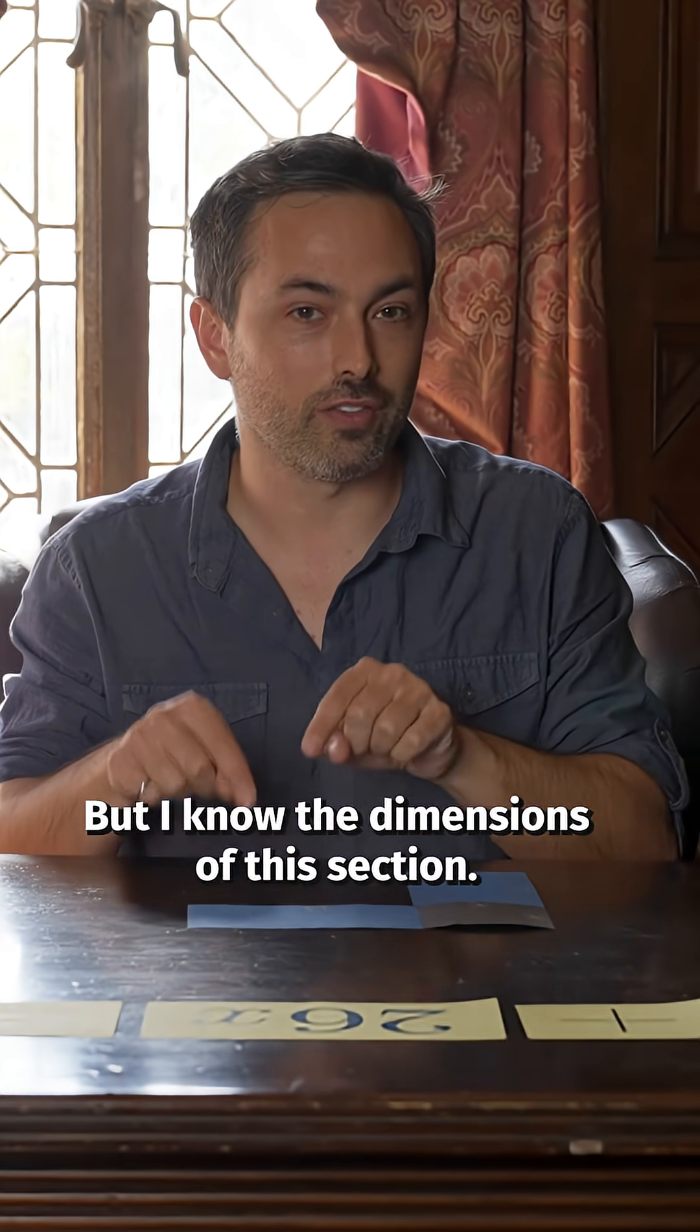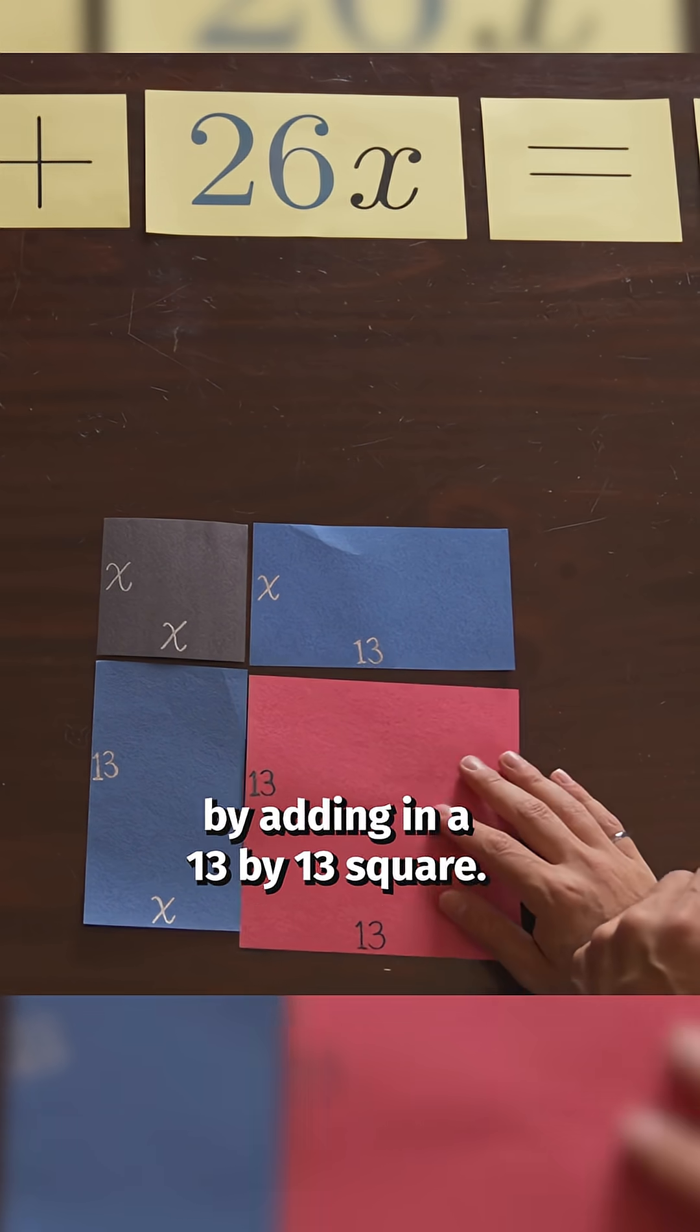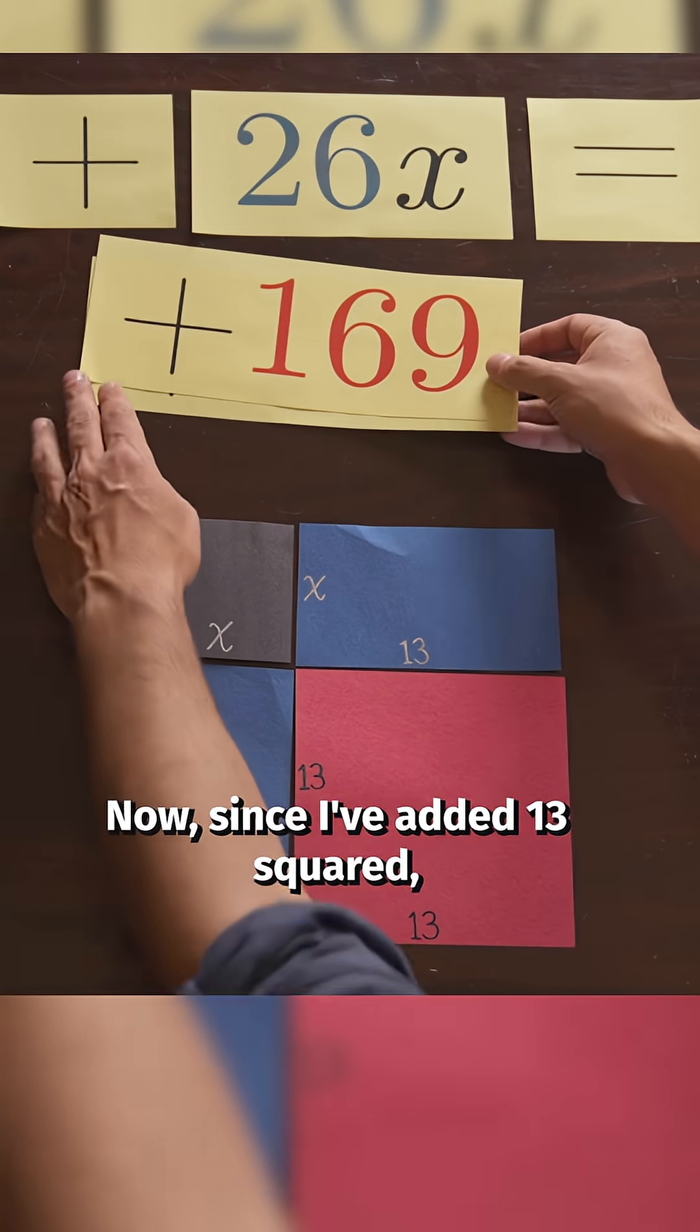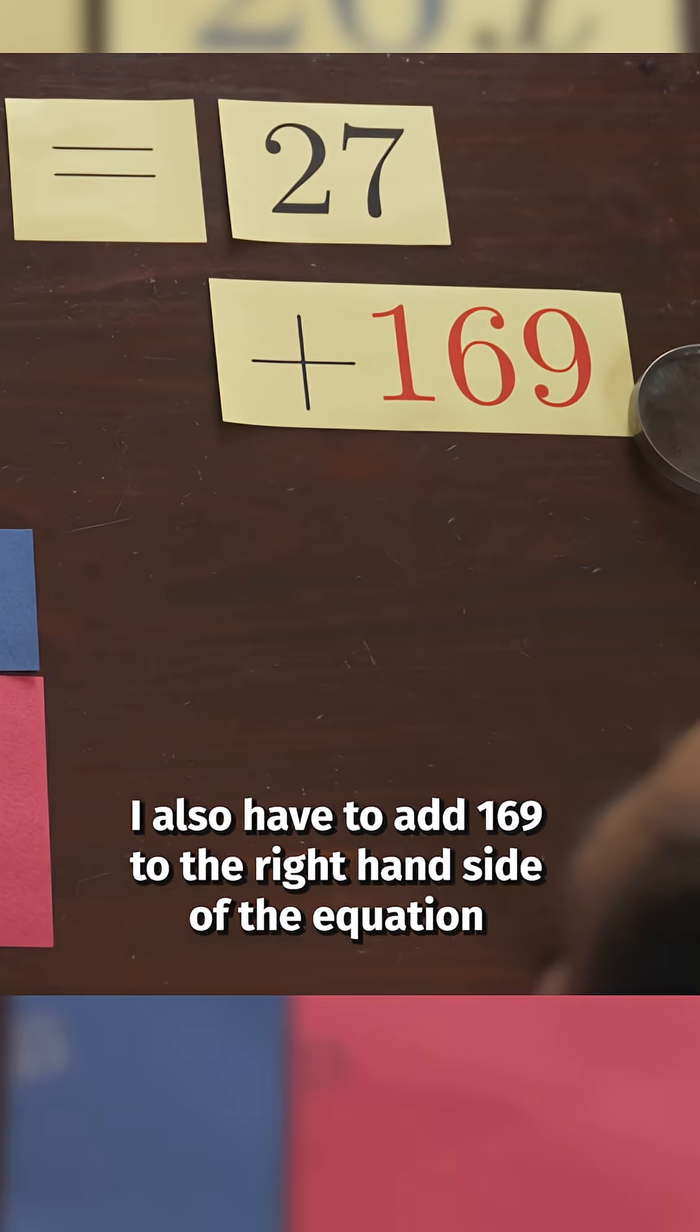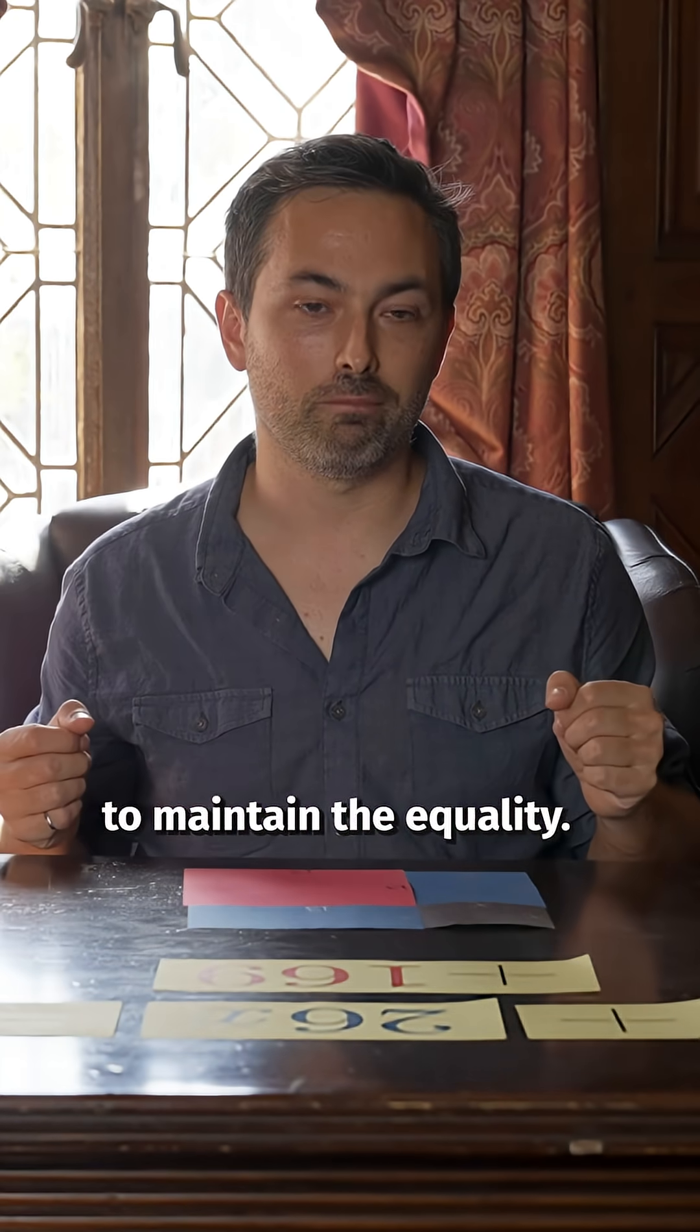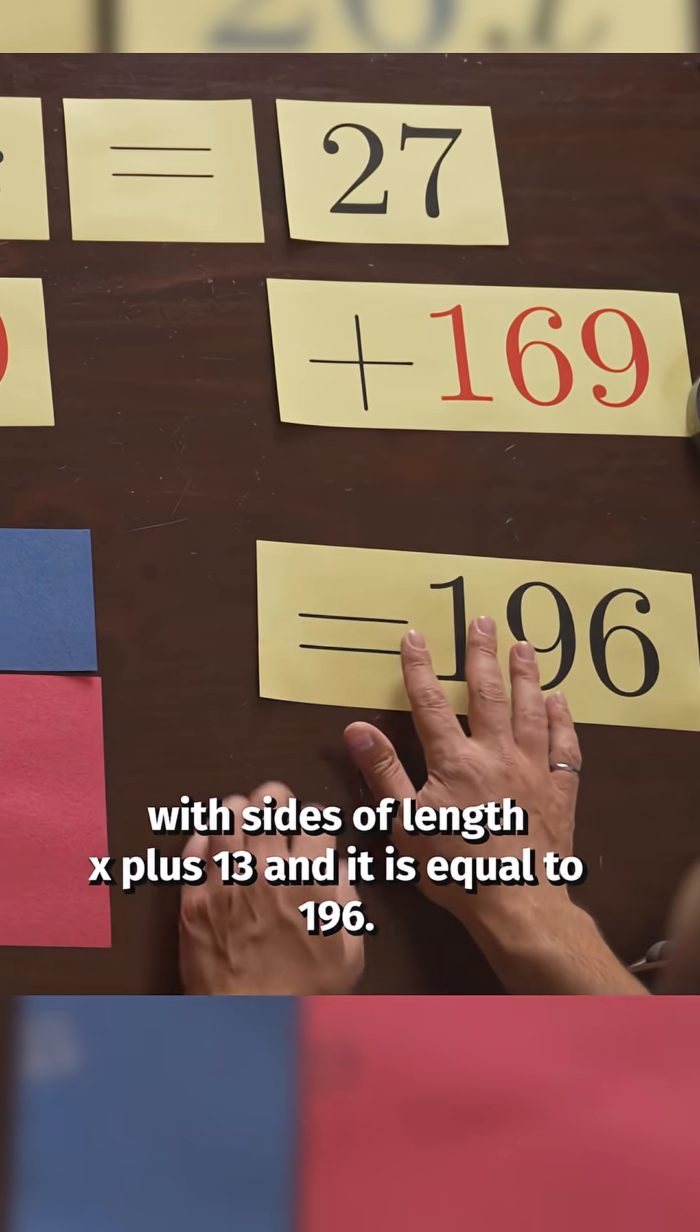But I know the dimensions of this section, it's just 13 by 13. So I can complete the square by adding in a 13 by 13 square. Now since I've added 13 squared or 169 to the left hand side of the equation, I also have to add 169 to the right hand side of the equation to maintain the equality.